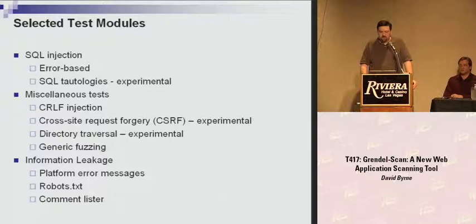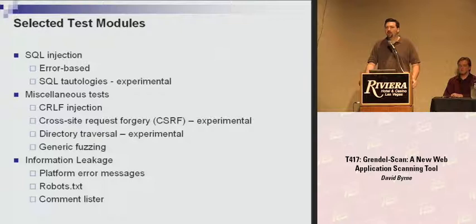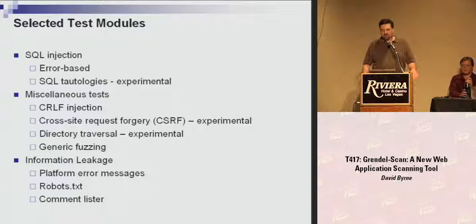The SQL tautologies module is marked experimental because the accuracy isn't quite what I'd like. Testing for SQL injection using tautologies is well beyond the scope of this presentation, but from an automated standpoint, you have to answer: does response A look more like response B or response C? That's easy for a human — a human can read text and pick up on subtle visual cues that are difficult for a program to identify. I'm working on techniques to significantly improve response scoring, and I'm optimistic this will be out of the experimental phase by the next release. Just because it's marked experimental doesn't mean it's broken — it just means significant changes are coming.